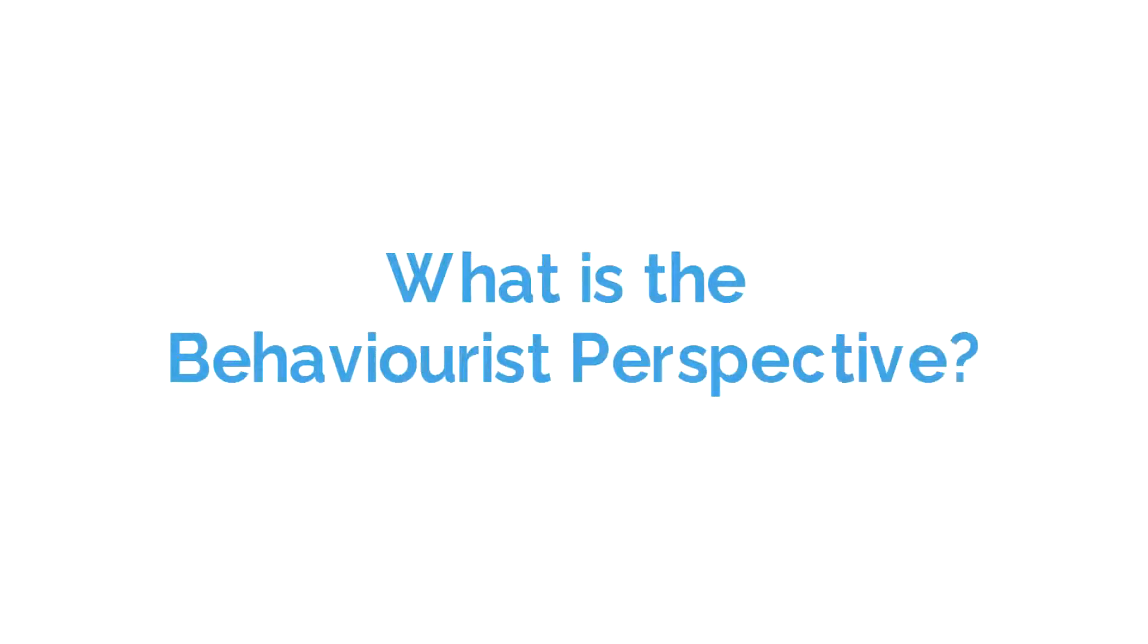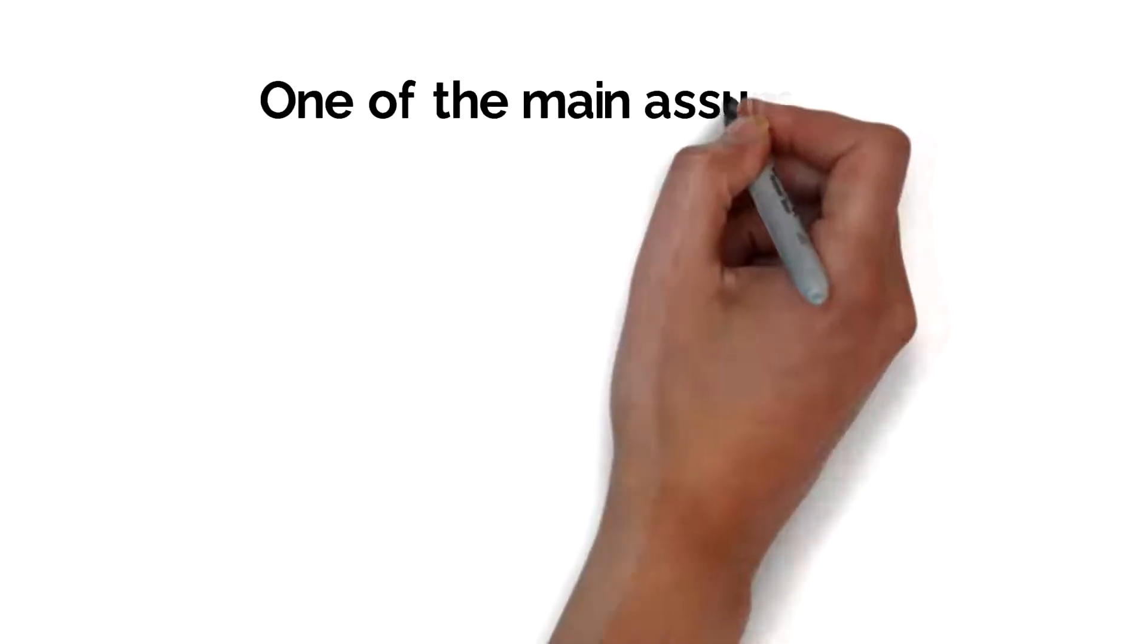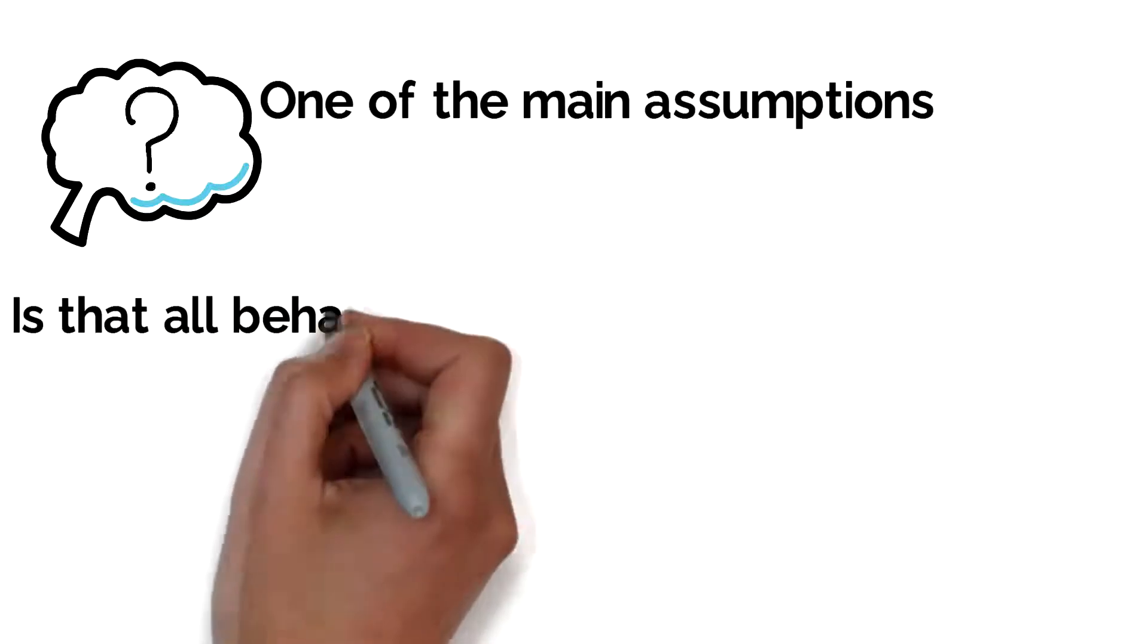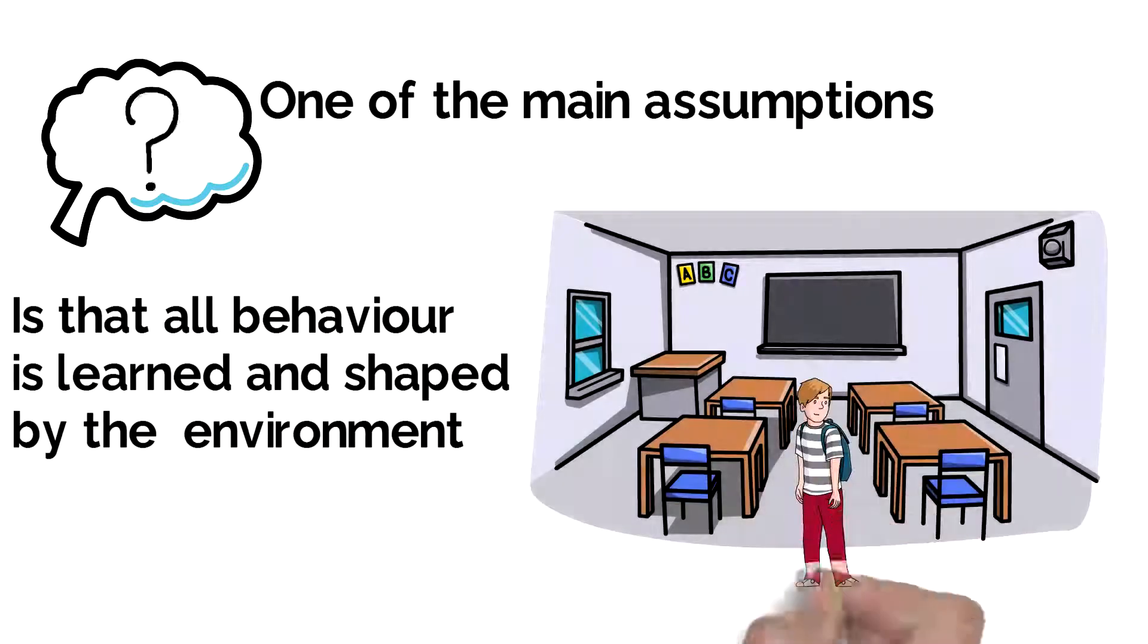What is the behaviourist perspective? One of the main assumptions of the behaviourist perspective is that all behaviour is learned, or conditioned, and shaped by the environment.